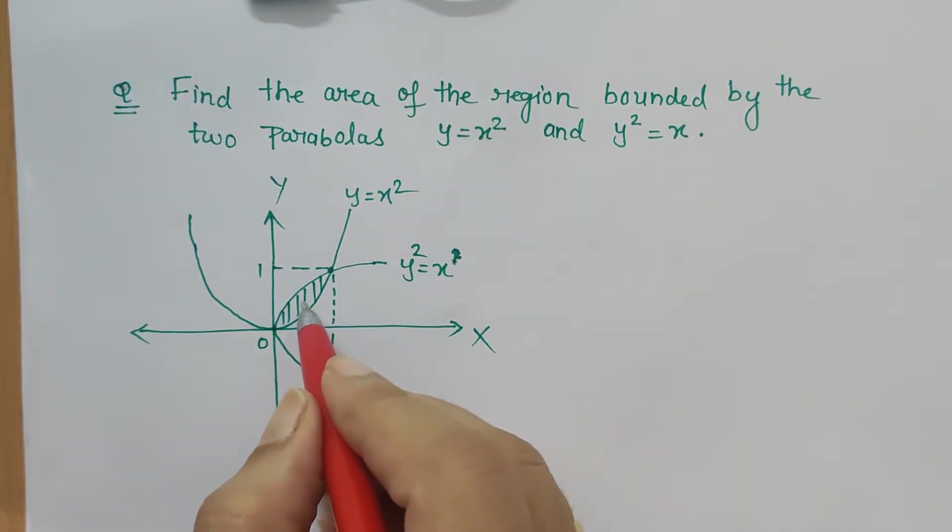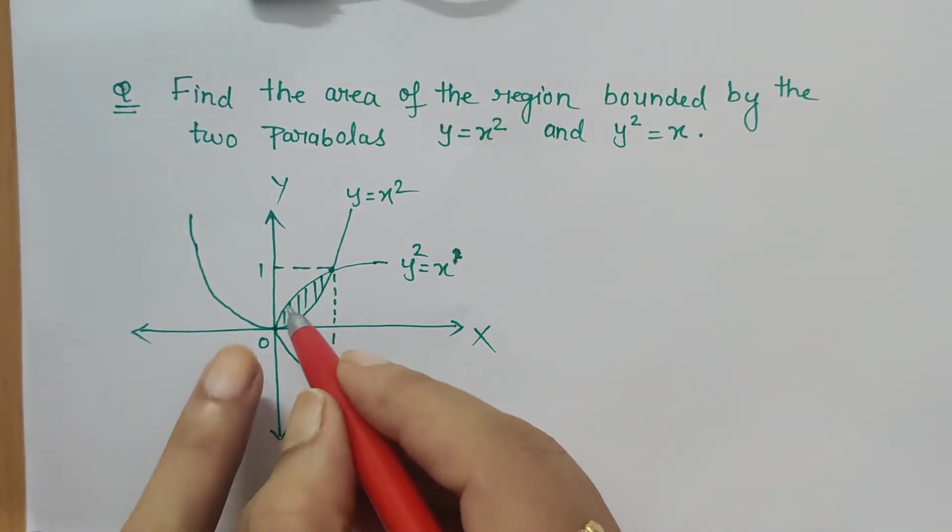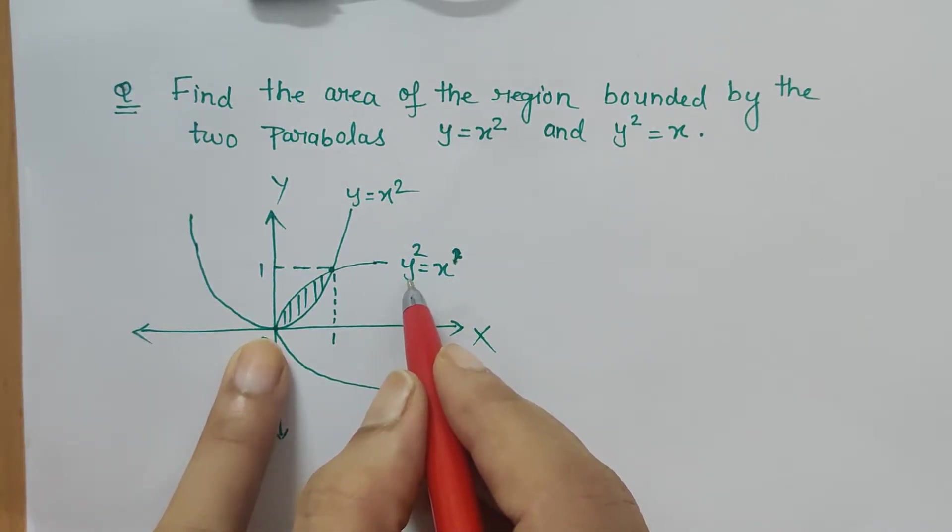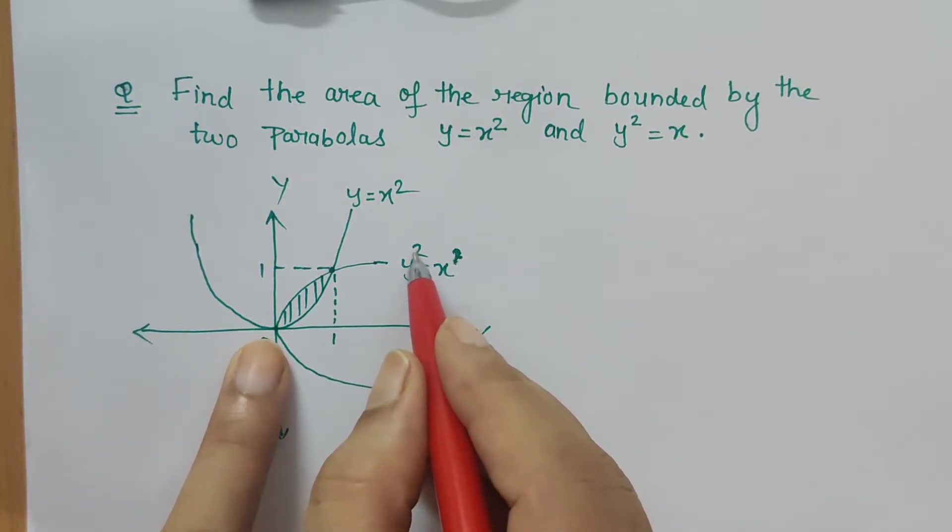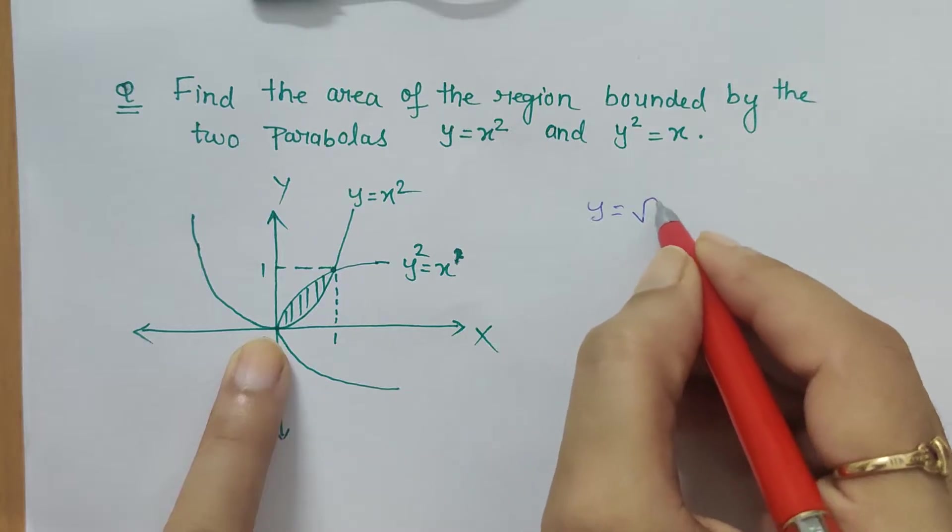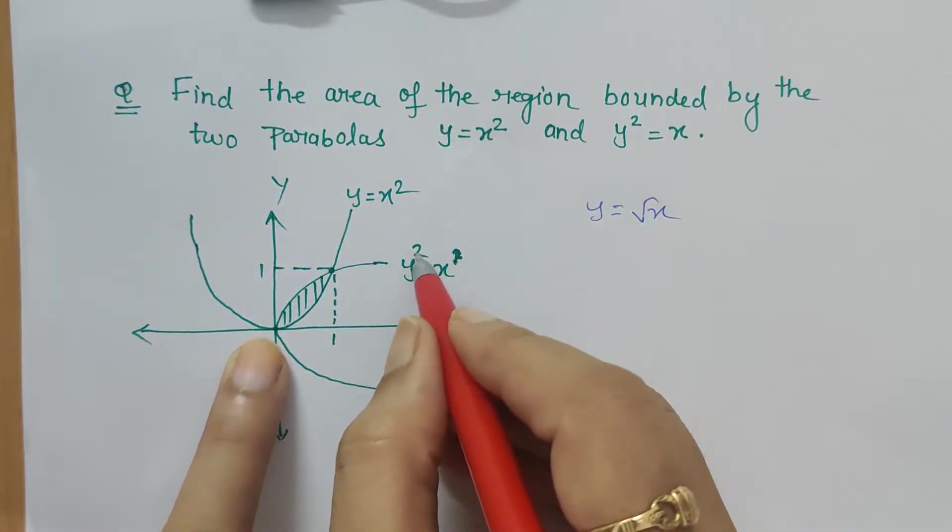Here the above curve is y² = x. How can we write this y function in the form of x by transferring the square to the right-hand side? This gives us y = √x, because when I take square root on both sides, the square gets vanished.